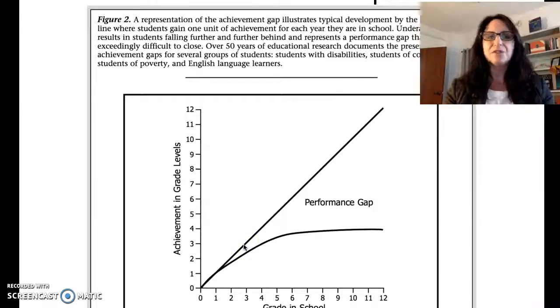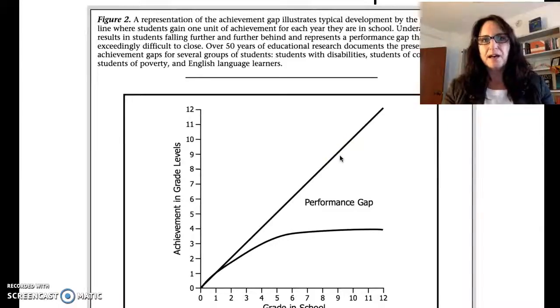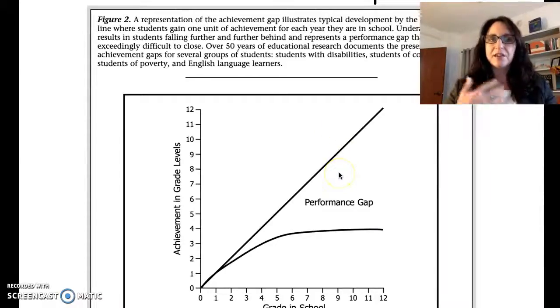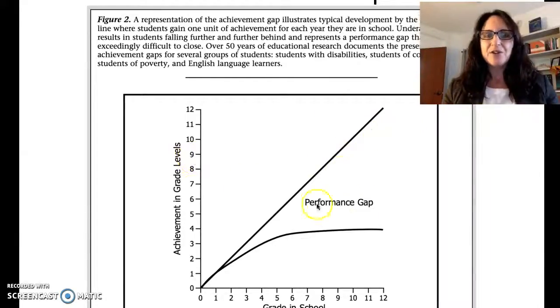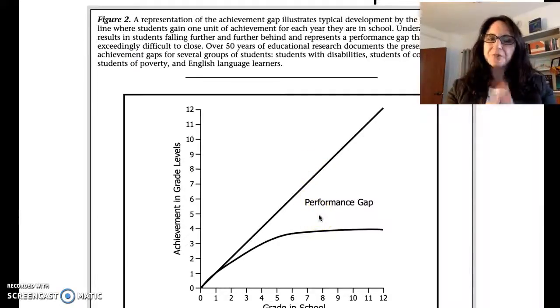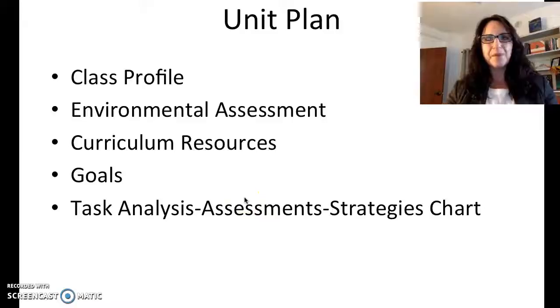What they found is that students with disabilities, students of color, students in poverty, and English language learners, they start plateauing off and they don't make the improvements that they need to compared to their peers who don't have the same diverse learning needs. It's our job as teachers to help make this gap smaller.